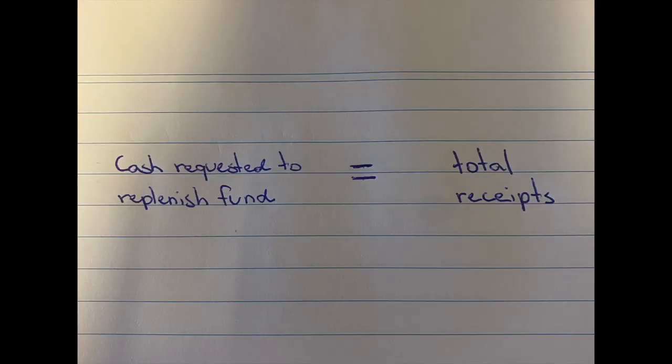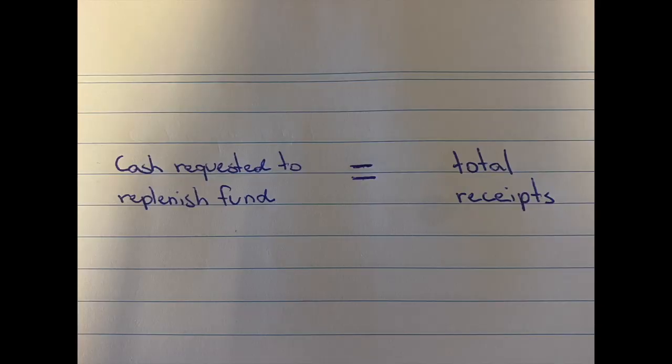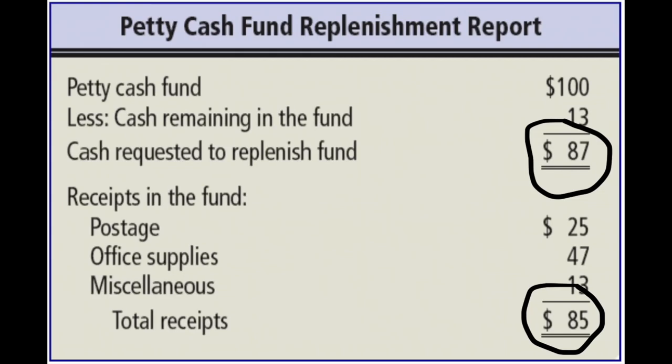If the total receipts and cash requested to replenish the fund are equal, then we debit the expenses and credit cash. At the end of every month, the Petty Cash account will need to be replenished using cash from the main cash account.